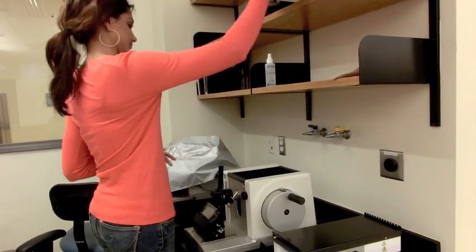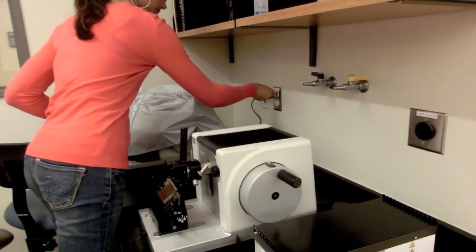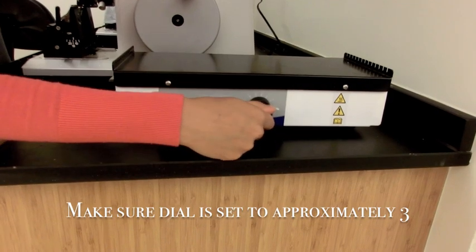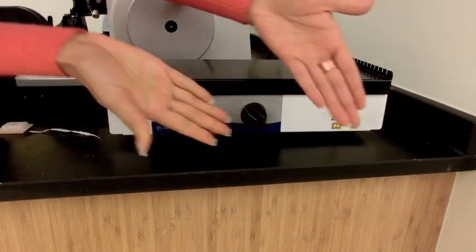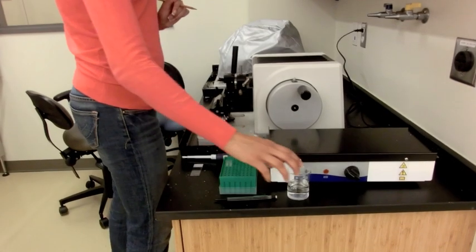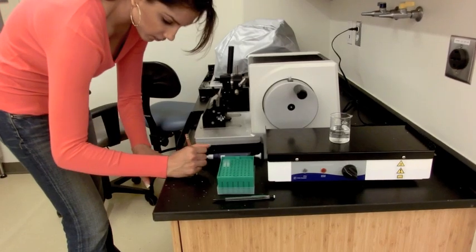Uncover the microtome. Next to this machine you should find the slide warmer. Plug this in and adjust the dial to the middle position. Place a beaker of warm water on the slide warmer and keep a transfer pipette within reach.